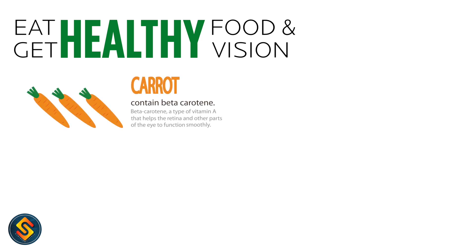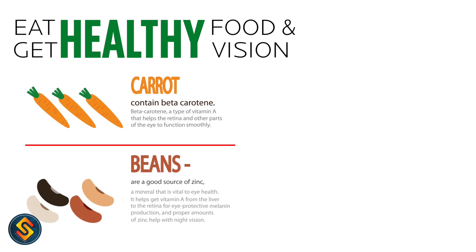Carrots contain beta carotene, a type of vitamin A that helps the retina and other parts of the eye to function smoothly. Beans are a good source of zinc, a mineral that is vital to eye health. Zinc helps get vitamin A from the liver to the retina for eye-protective melanin production, and proper amounts of zinc help with night vision.